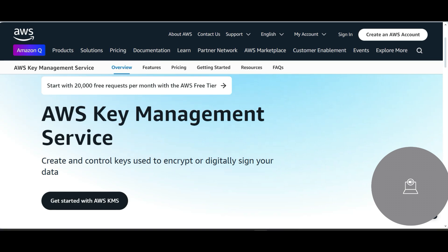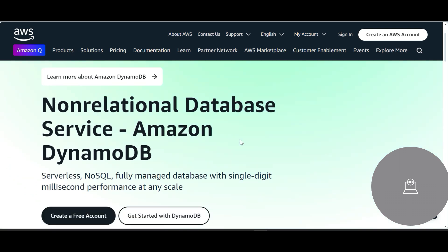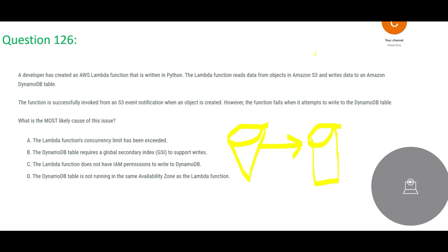Next question: a developer has created a Lambda function in Python. This Lambda function reads data from an S3 bucket and writes to a DynamoDB table. DynamoDB is a NoSQL non-relational database used for very high performance — companies like Uber use it. S3 is cloud object storage for any objects you store. The developer is trying to move data from S3 into DynamoDB.